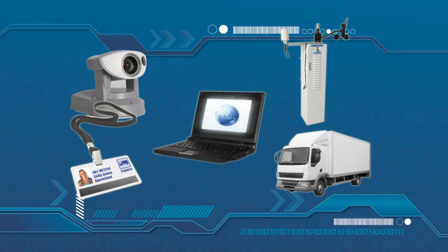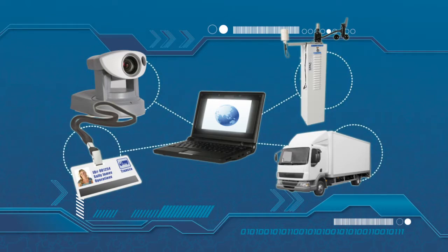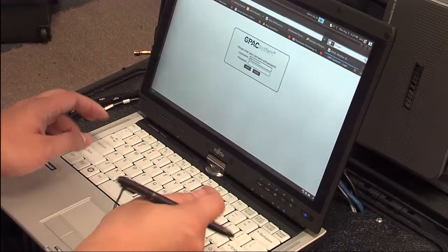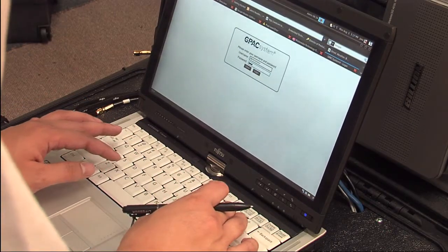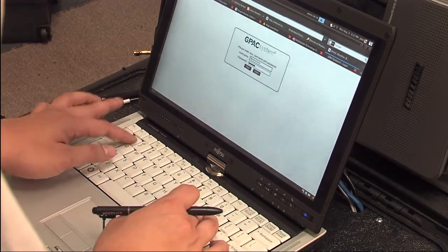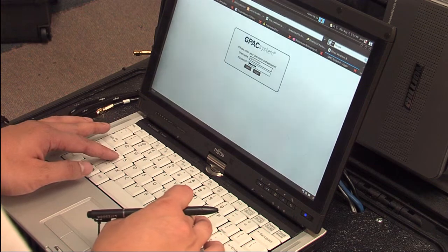By using a GPAC system, data or video feeds from each of these individual monitoring and security devices can be accessed via the GPAC system web browser. And information from the feeds can be easily accessed remotely over the internet by authorised personnel.